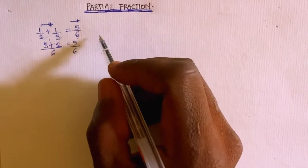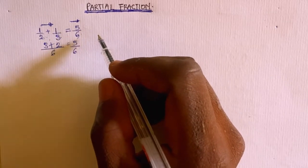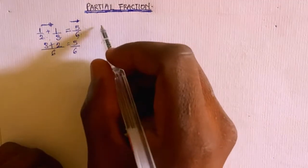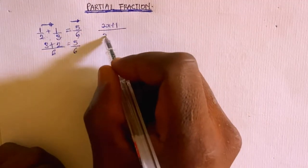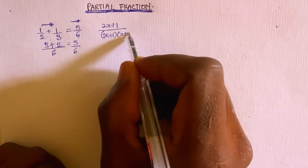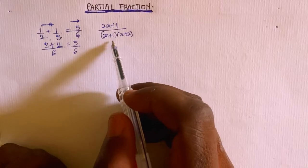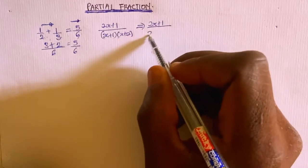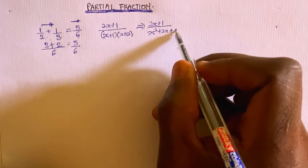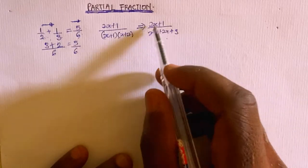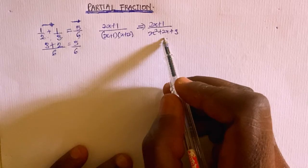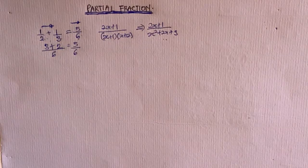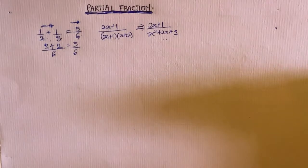In partial fractions, you are going to be asked to resolve a fraction in algebraic form into its simplest constituents. For example, suppose you are given 2x plus 1 divided by (x+1)(x+2). That is the factored form of the denominator. We could have something like 2x plus 1 over x squared plus 2x plus 3, and you resolve this algebraic fraction into its smaller constituents — that is known as partial fractions.